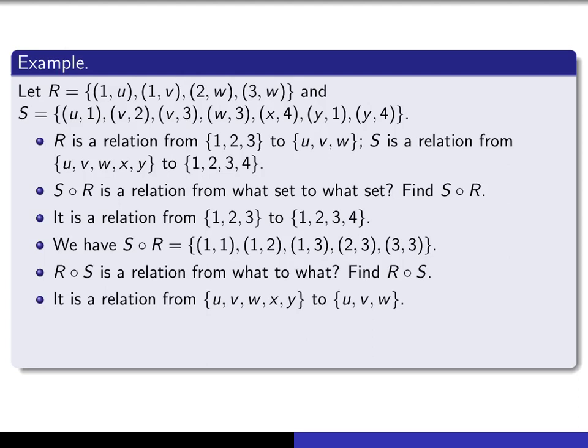S relates u to 1, and R relates 1 to u, and also 1 to v. So we'll have (u,u) and (u,v) in the composition. S relates v to 2, and 2 is R related to w, so it will be (v,w). S relates v to 3, and R relates 3 to w, so we'll have (v,w). S relates w to 3, and R relates 3 to w, so we'll have (w,w).